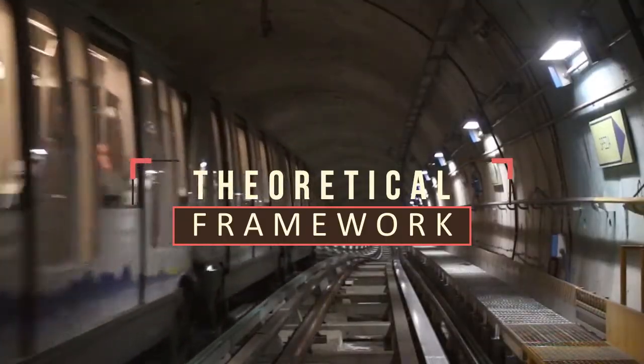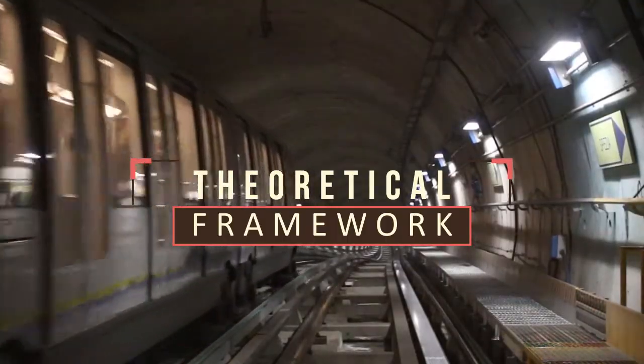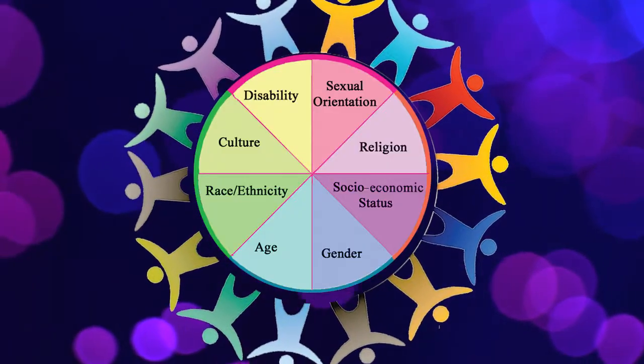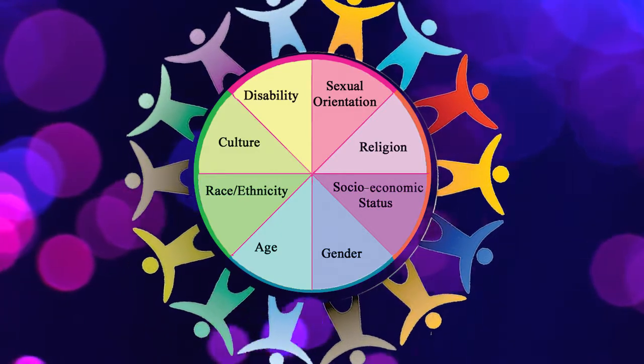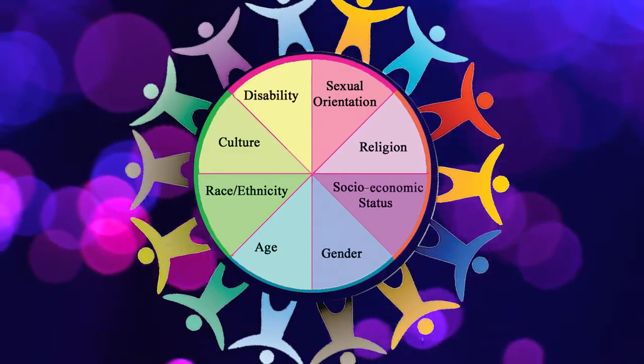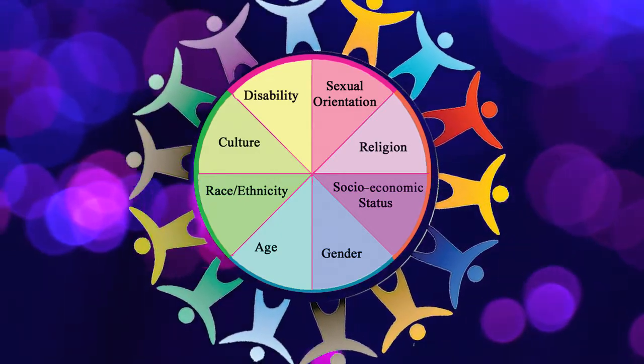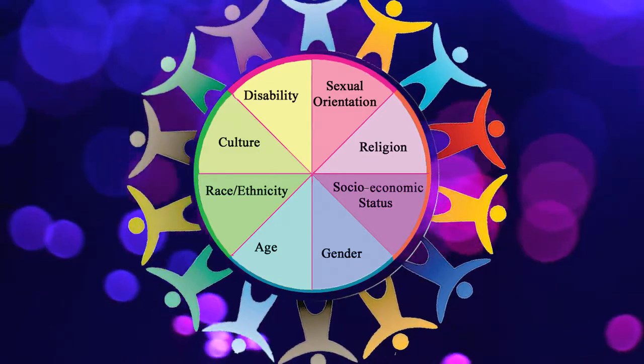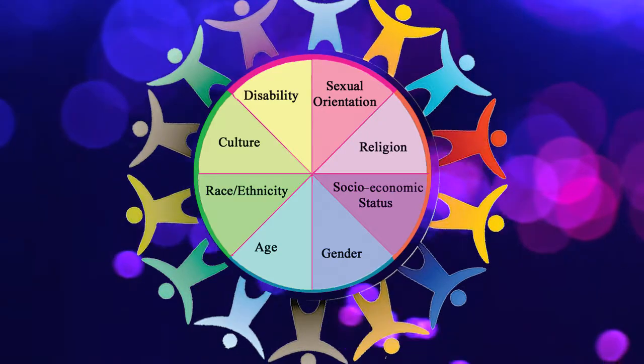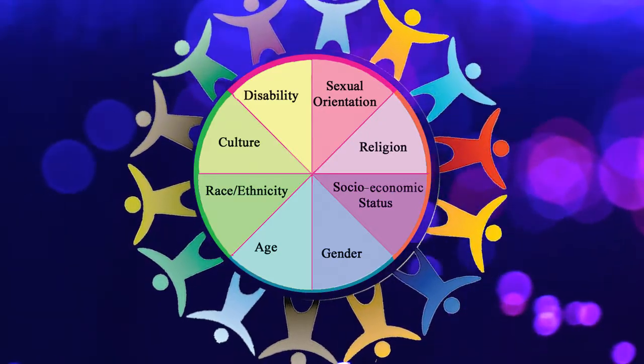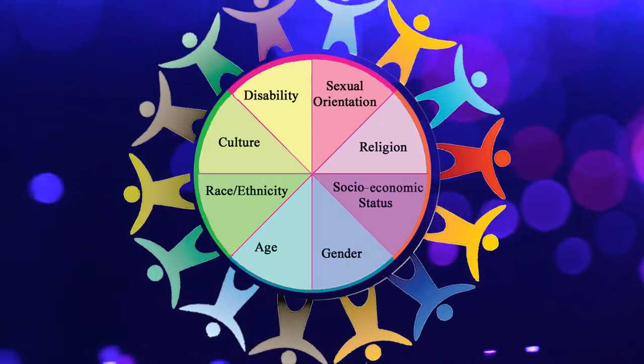Theoretical framework: there are eight social identity frameworks. Building on these eight categories discussed in class can further depict an employee's social identity, which may allow us to further understand various generational employee attributes.